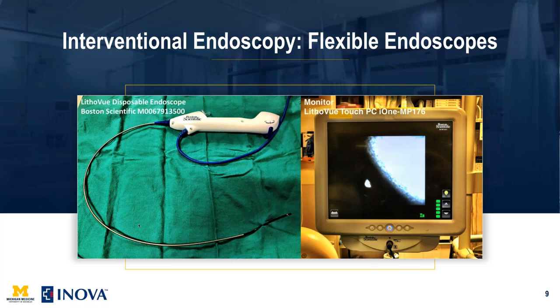The LithoView disposable endoscope is a single-use scope that costs about $1,500. If your institution doesn't have endoscopes at all, this one can easily be obtained. It's by Boston Scientific and comes with a handy monitor — you just plug in and go. It's a great scope for just about anything and can handle the Holmium laser as well as a range of baskets for shattering or removing stones.